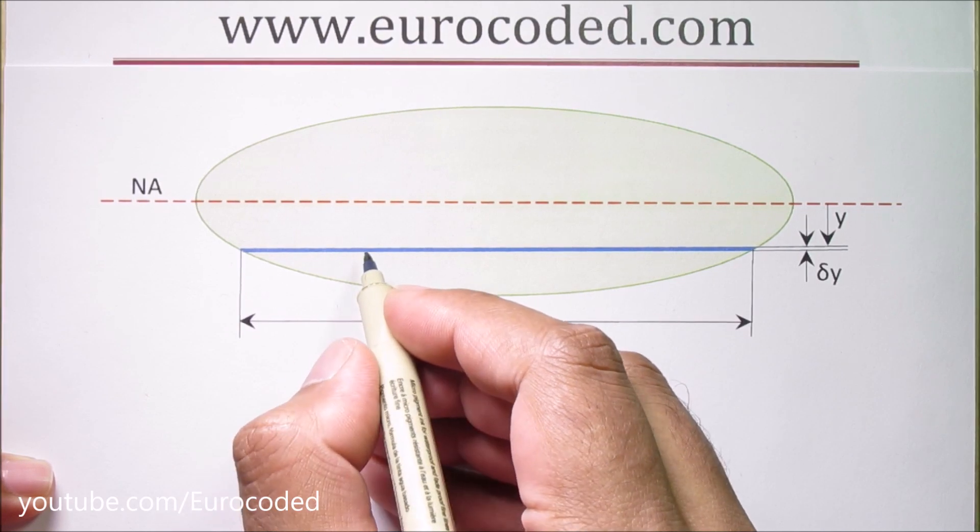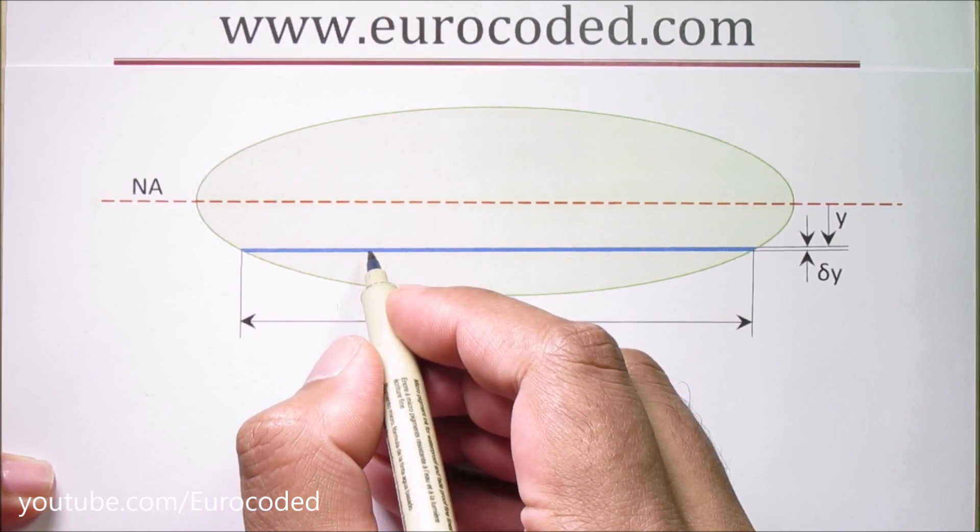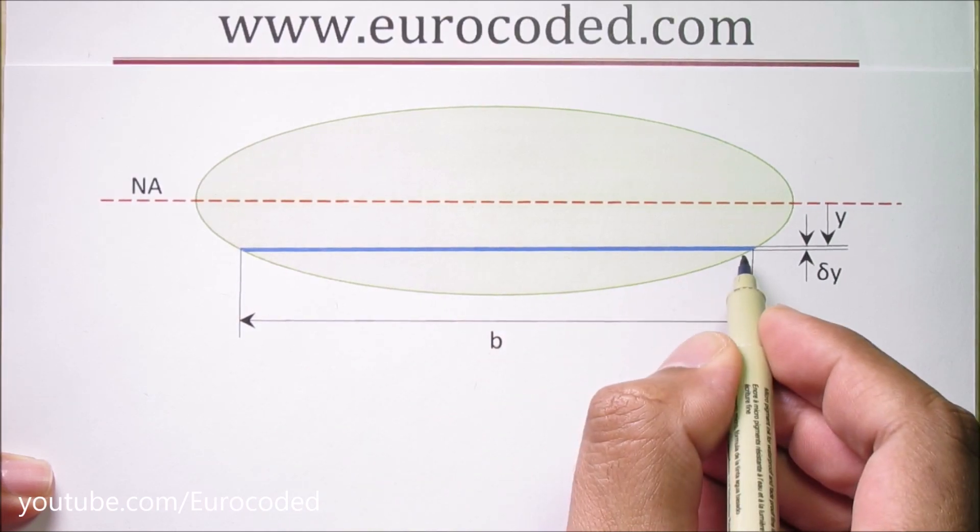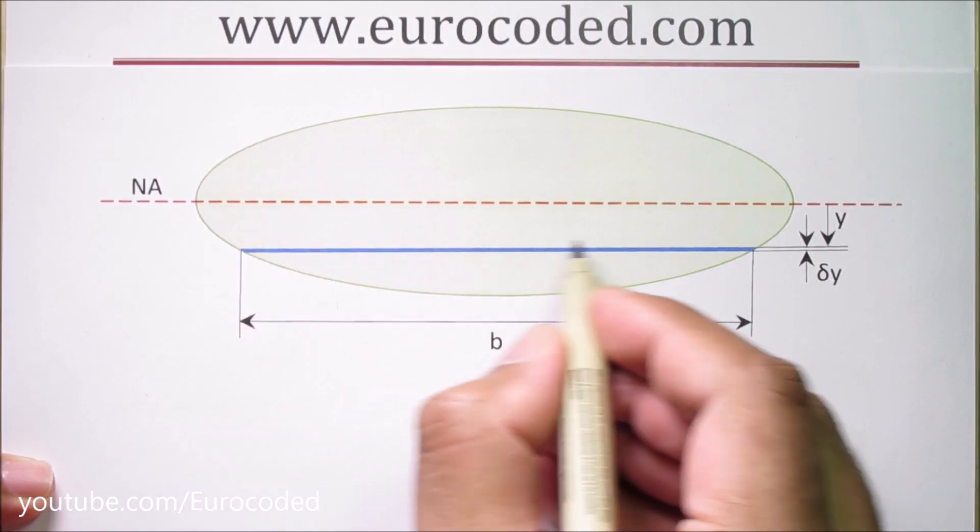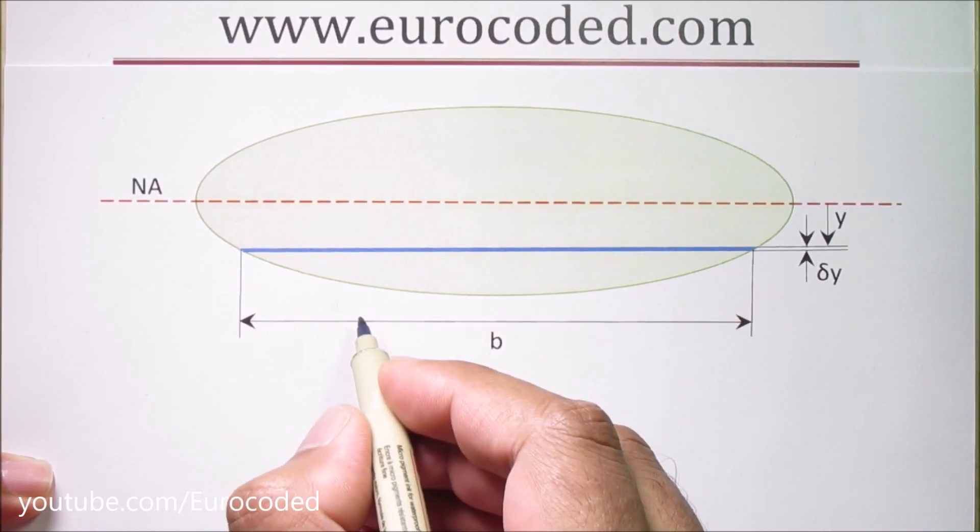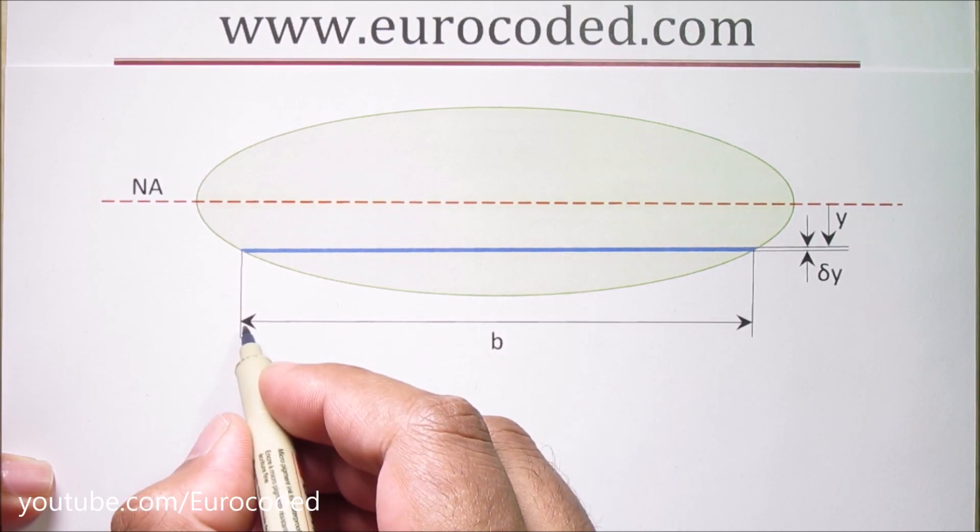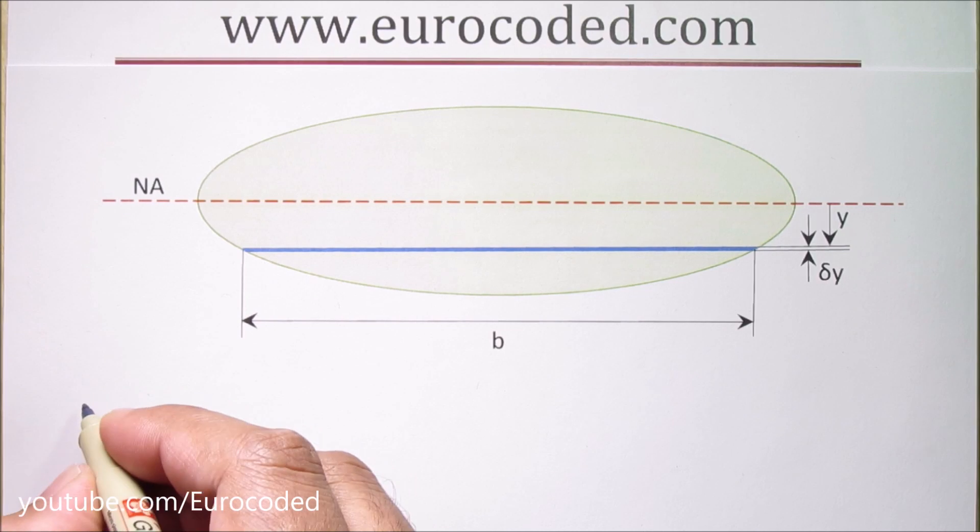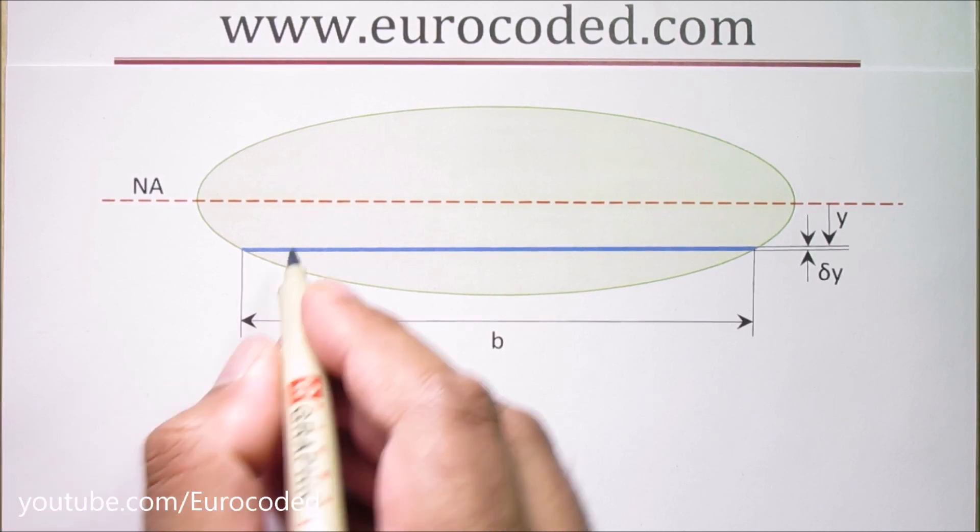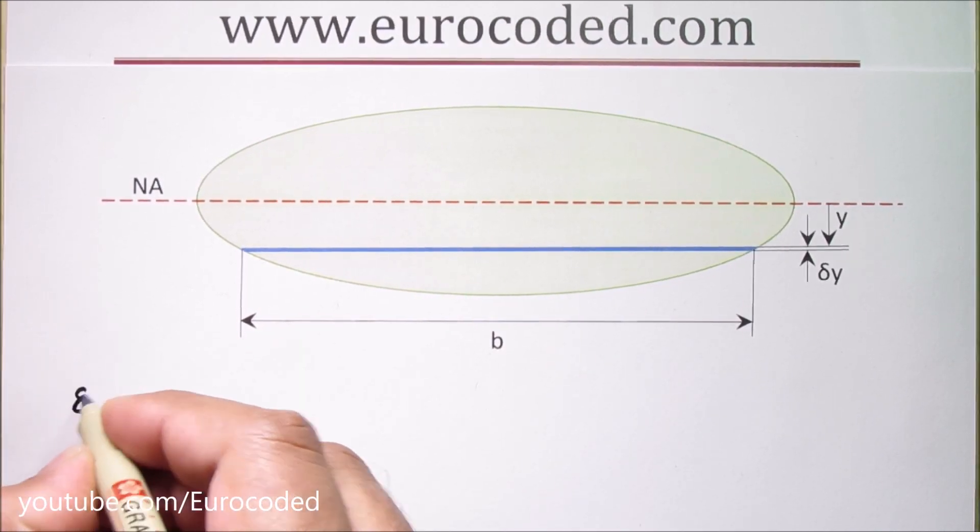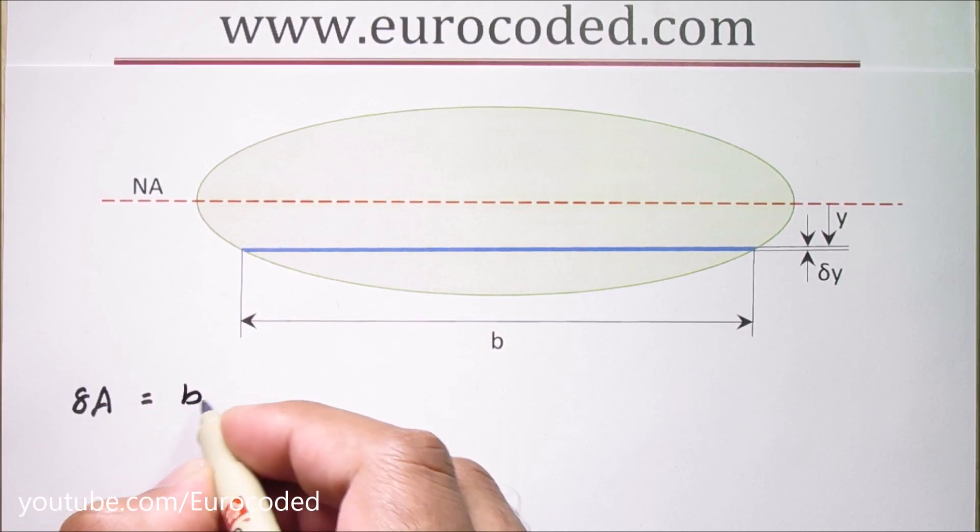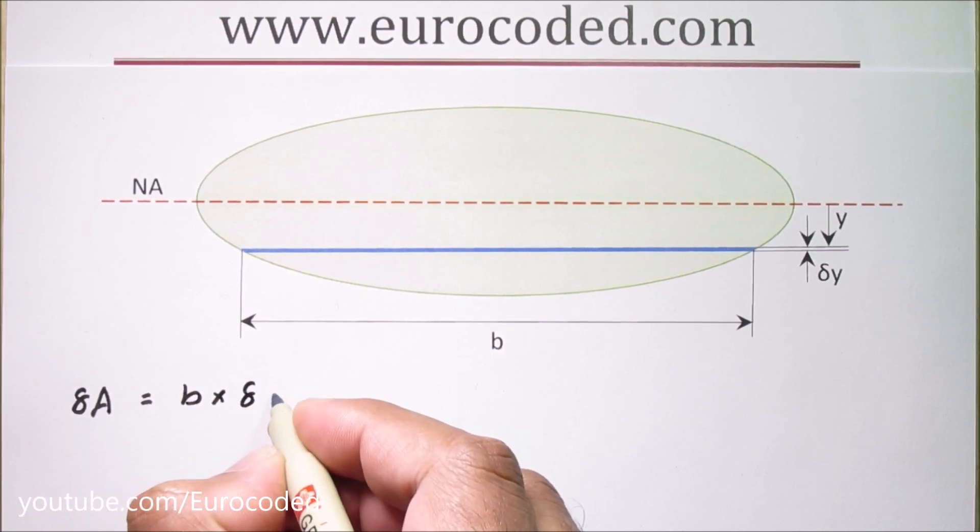In other words change in length is negligible when we go from the bottom line of this strip to the top line of this strip and therefore we can consider that the width of this strip is b. Now we can write that the area of this small strip delta A is equal to b times delta y.